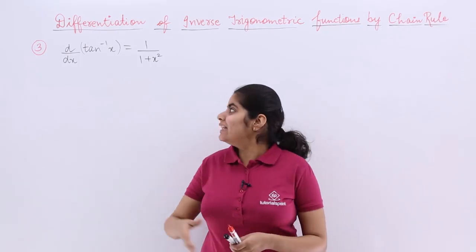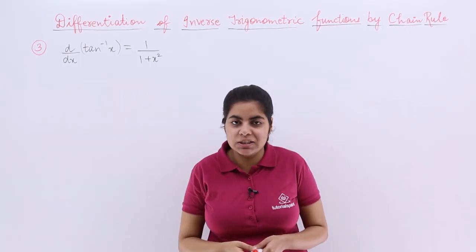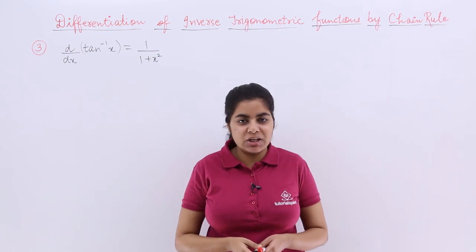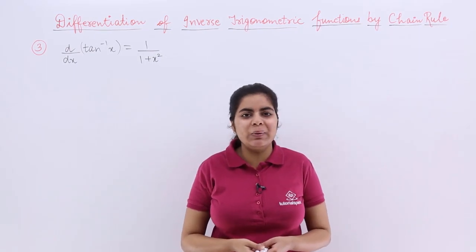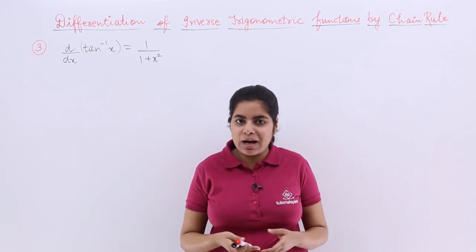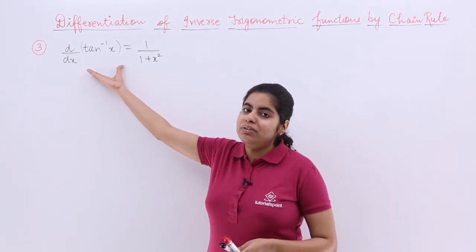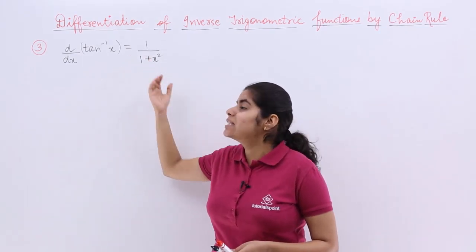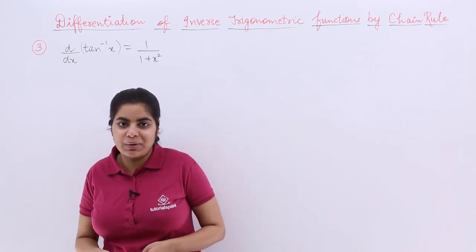In this video, let's see the third differentiation of inverse trigonometric function. The function we are going to deal with is tan inverse x and you have to memorize the formula. The differentiation of tan inverse x with respect to x is 1 upon 1 plus x square.